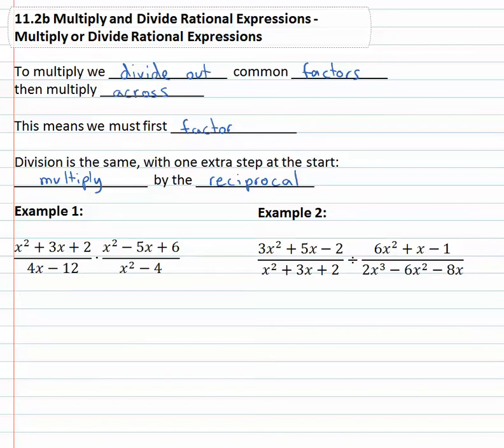Starting with the numerator, we need to factor that first numerator. Because there's a 1 in front, we want to multiply to 2 and add to 3. So we have x times x to get x squared, 2 times 1 if they're both positive will multiply to 2 and add to 3. Over in the denominator, the first thing we always look for when factoring is the greatest common factor. This one does have a greatest common factor of 4, so we'll factor out the 4, leaving us with x minus 3.